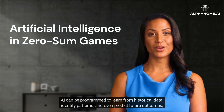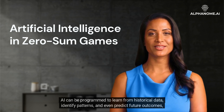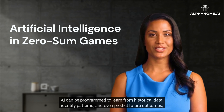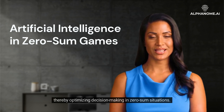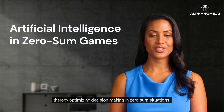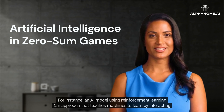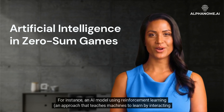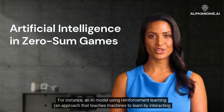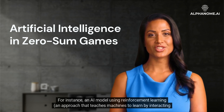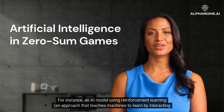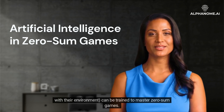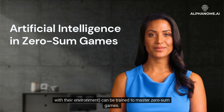AI can be programmed to learn from historical data, identify patterns, and even predict future outcomes, thereby optimizing decision-making in zero-sum situations. For instance, an AI model using reinforcement learning — an approach that teaches machines to learn by interacting with their environment — can be trained to master zero-sum games.